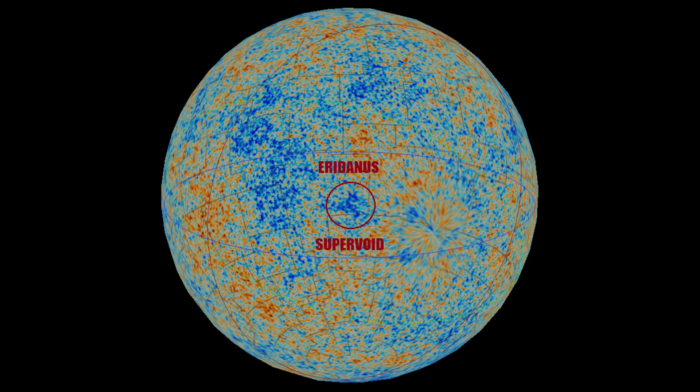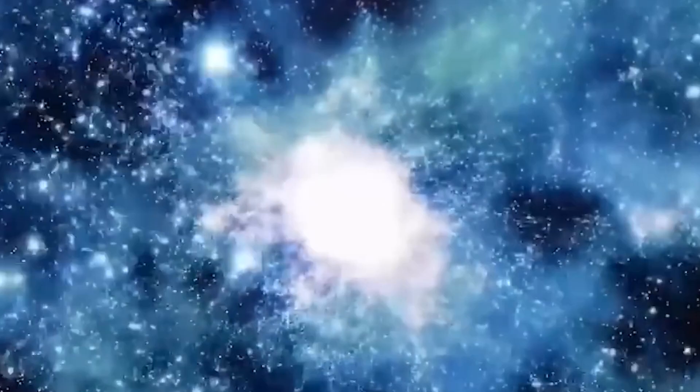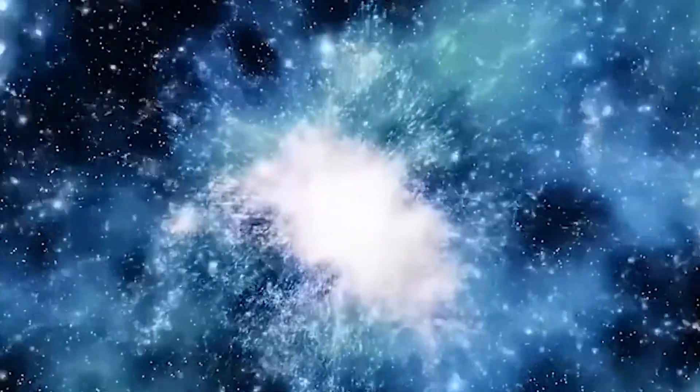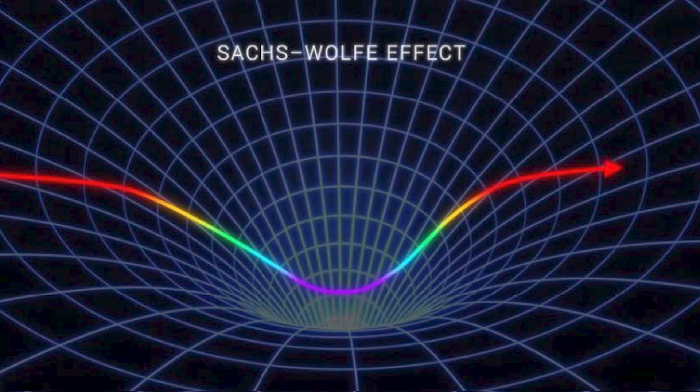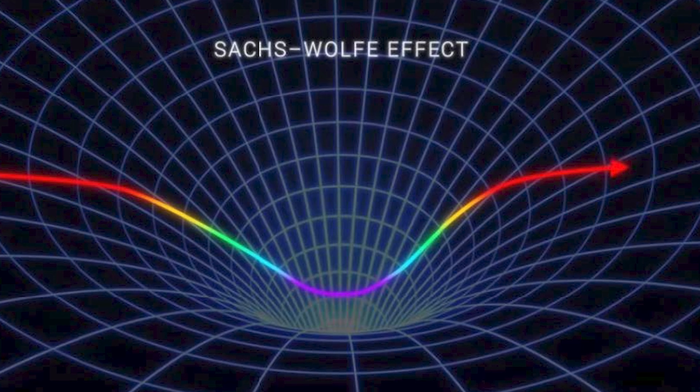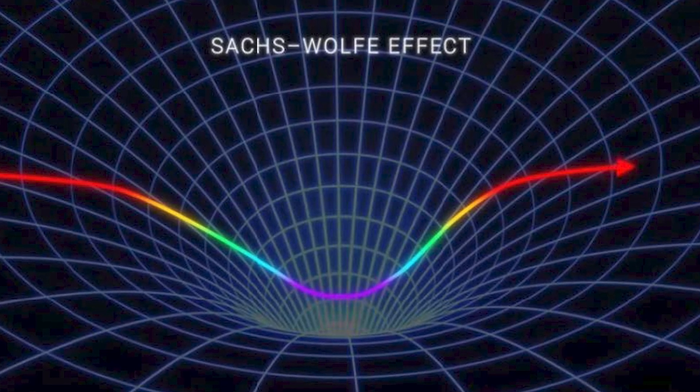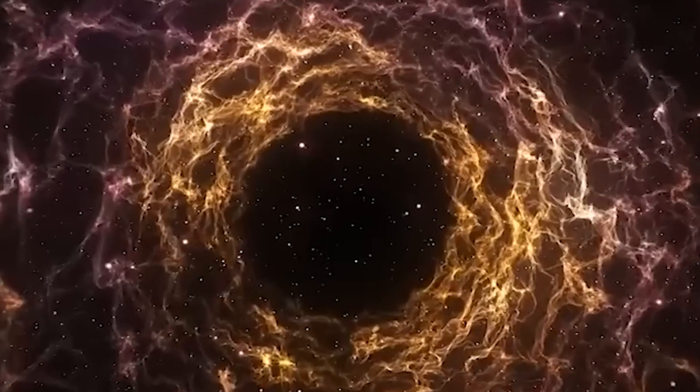Next, we voyage to the Eridanus Supervoid, a superhollow extending approximately one billion light years. Despite its enormity, it's strikingly barren, even compared to the sparsely populated Boötes Void. This supervoid is associated with Relic Radiation's cold spot, a cooler area in the cosmic microwave background and the Big Bang's afterglow. Scientists theorized the supervoid may create this cold spot via the Sachs-Wolfe effect, where photons lose energy while traveling through the void, leading to a colder radiation patch.